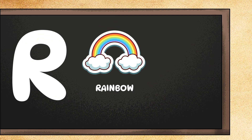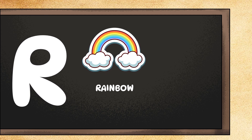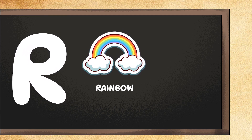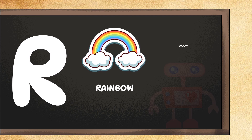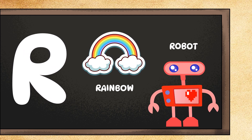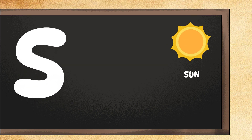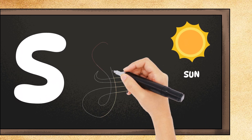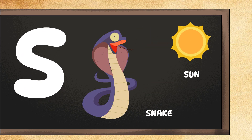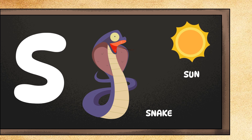R is for rainbow. Can you make a big rainbow shape with your arms? Lovely! R is also for robot. Can you do the robot dance? Beep boop beep! S is for sun. Can you shine like a bright sun? Wonderful! S is also for snake. Can you slither like a snake?